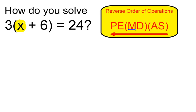So I'm going to undo that multiplication by dividing both sides by 3.